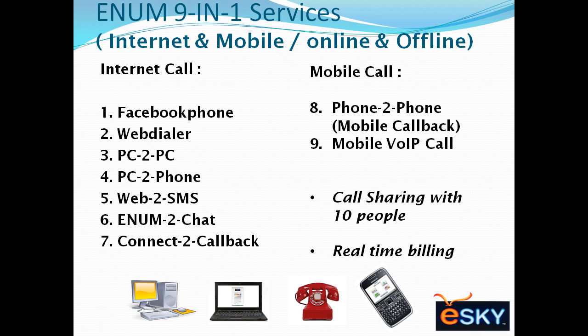eSky ENUM 9-in-1 services means you can enjoy any of 9 services with one single ENUM. You can make calls either online or offline using internet or GSM mobile services. eSky gives you: Number 1, Facebook phone — call from Facebook; Number 2, web dialer — call from browser; Number 3, PC to PC; Number 4, PC to phone — call from any PC; Number 5, web to SMS — send SMS from website; Number 6, ENUM to chat — online chatting; Number 7, connect to callback.